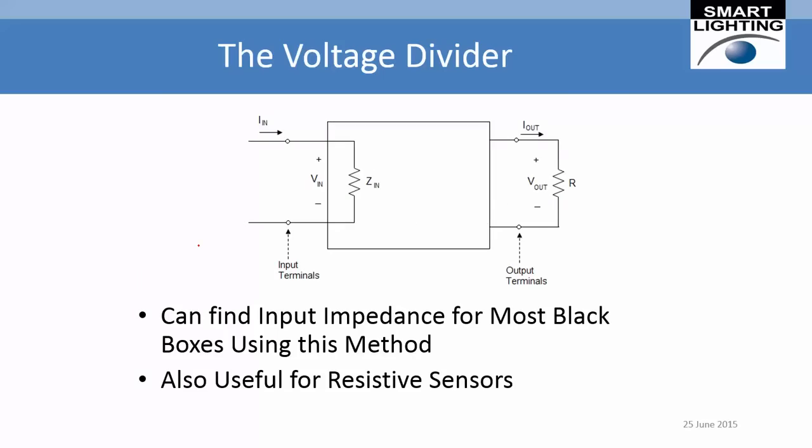So how can we use this method? We can use it to find the resistance of some device we have no idea about — it's like a black box that acts like a resistor with no value written on it. We just plug it into a circuit like this and figure it out. But where it's really, really useful is with sensors — devices used to sense physical parameters like light intensity, temperature, or force — which are resistors whose value of resistance changes as a function of whatever they're measuring.